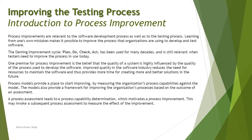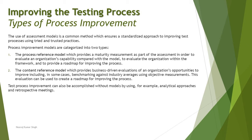There are two different ways by which you can improvise your process or get references and data to help with process improvement. The use of an assessment model is a common method which ensures a standardized approach to improve the test process using tried and trusted practices. Models like STEP, CTP, and TPI Next are well-established, well-practiced, and trusted sources of information to improvise your test process.